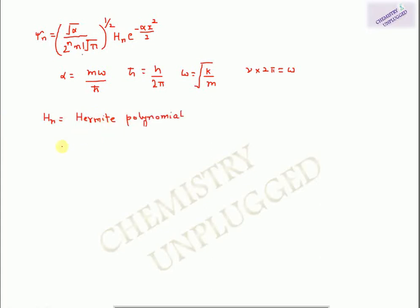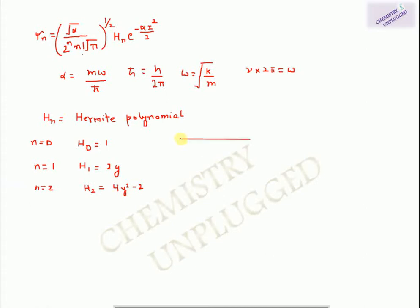Hₙ are known as Hermite polynomials. The first few are: H₀ = 1, H₁ = 2y, H₂ = 4y² − 2, H₃ = 8y³ − 12y, where y = √α · x.